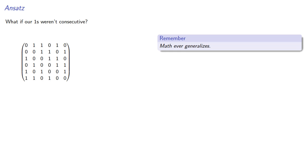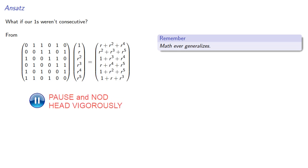Again we'll assume that the eigenvector has the form 1, r, r squared, and so on. The matrix product gives us, and again, eigenvalue r plus r squared plus r to the fourth is possible if r to the sixth is equal to 1.